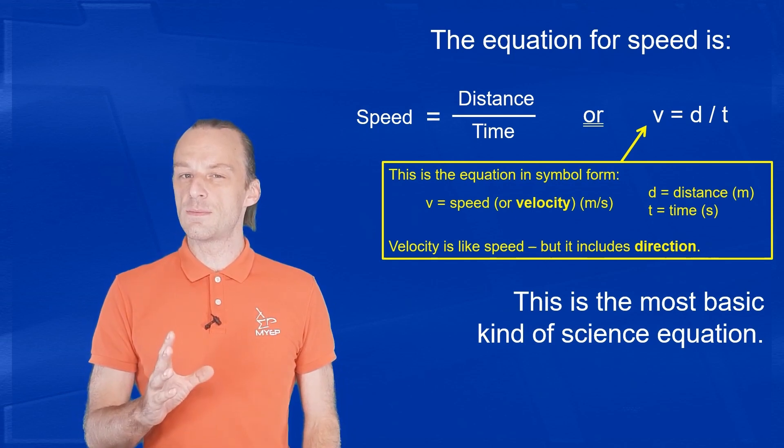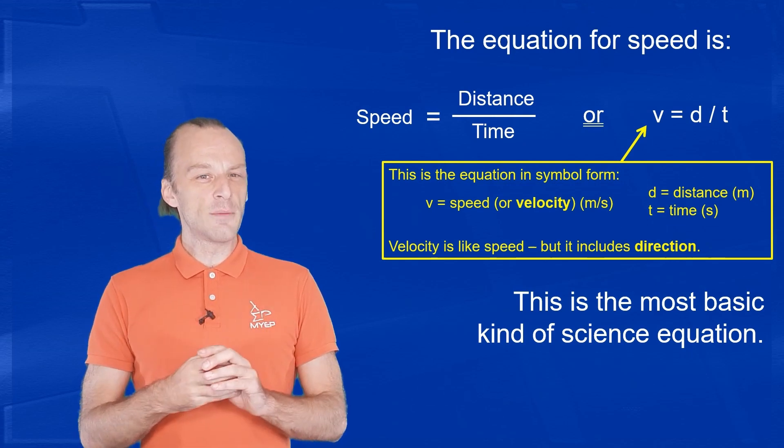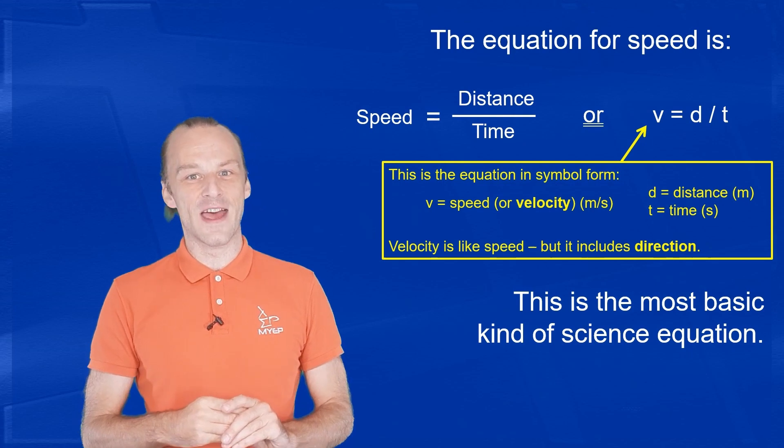We use V for speed because it stands for velocity. Velocity is a lot like speed, but it also includes direction. That makes it a little bit more complicated, so we won't talk about that right now.